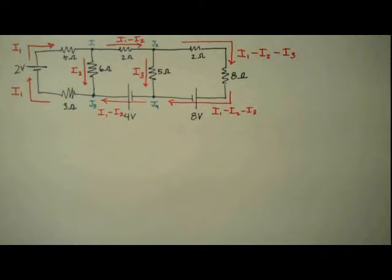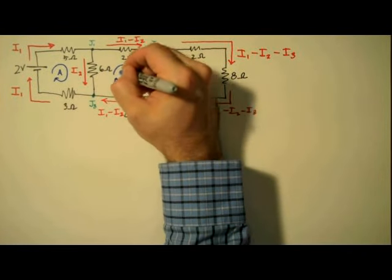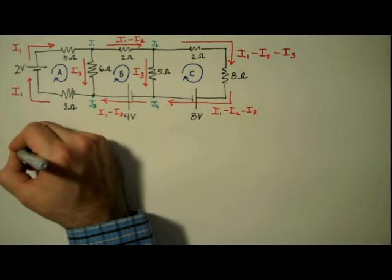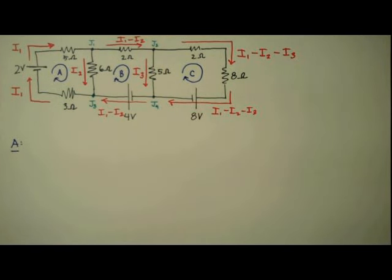When these two currents rejoin, they become I1 minus I2. And that's it for labeling currents. Now we label our loops. This would be loop A, here we have loop B, and loop C. Now that our circuit is labeled, we can apply the loop rule. The loop rule states that the sum of the voltages around a closed loop is equal to zero. We'll start by labeling loop A.